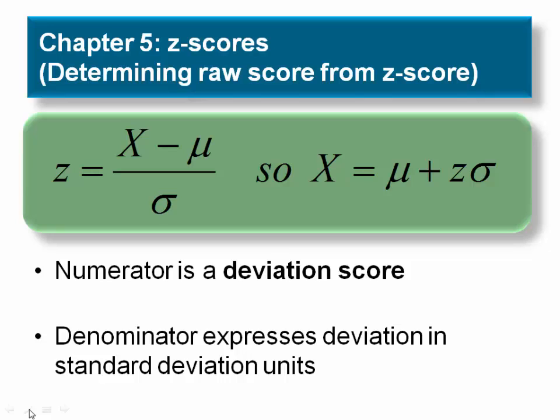You need to have the population mean and standard deviation values available. If you're working on a problem where you start out with a distribution of raw scores, you will be calculating the mean and standard deviation using the formulas you learned in chapters 3 and 4.